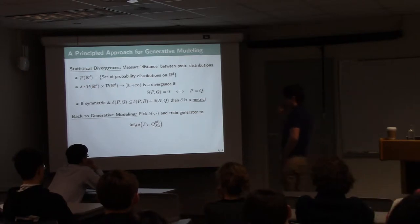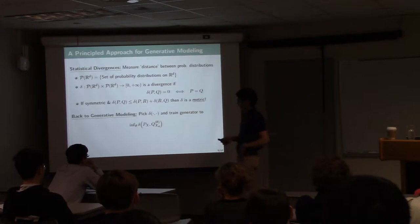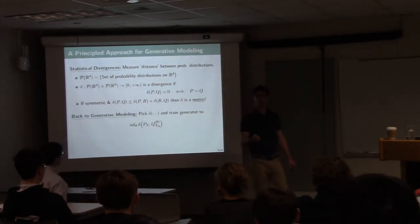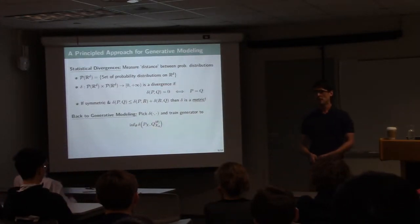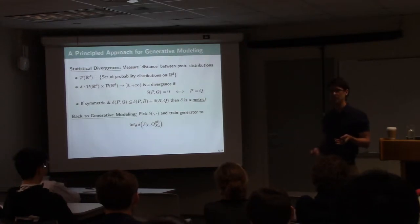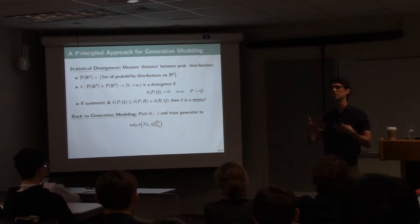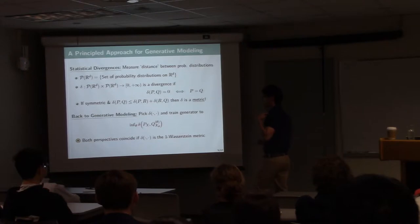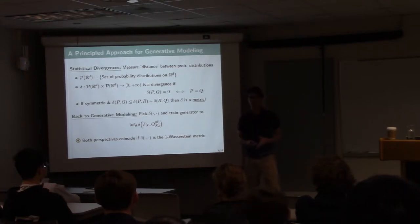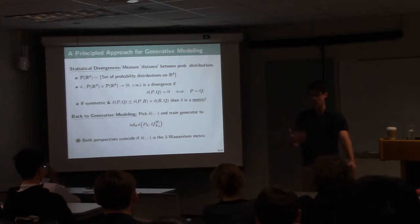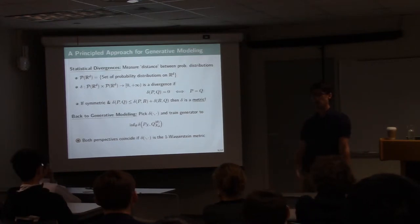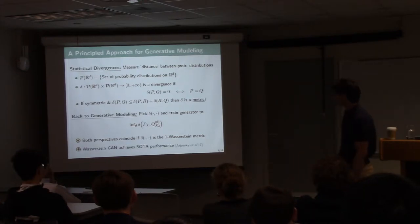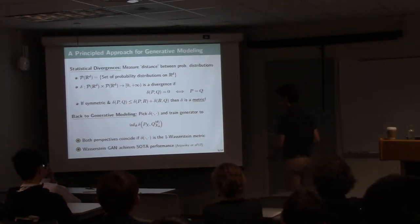It turns out that if you take delta as the 1-Wasserstein metric, these two perspectives — minimizing a statistical divergence and the minimax game formulation — don't just approximate each other but exactly coincide. This is to a great extent why the machine learning community believes Wasserstein GANs — GANs built based on the Wasserstein metric — perform so well in practice. From here on out we'll talk about that.